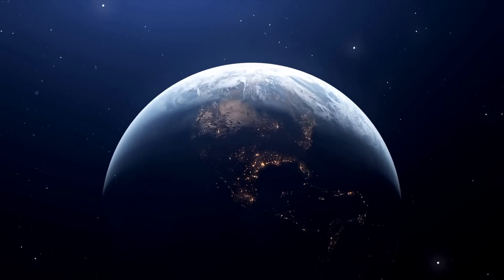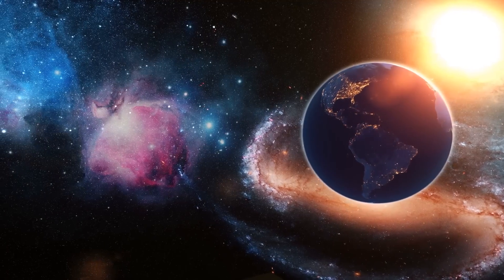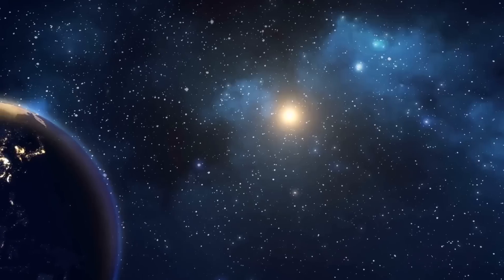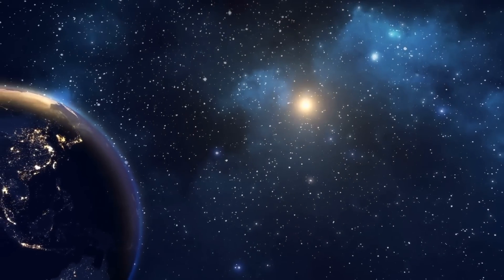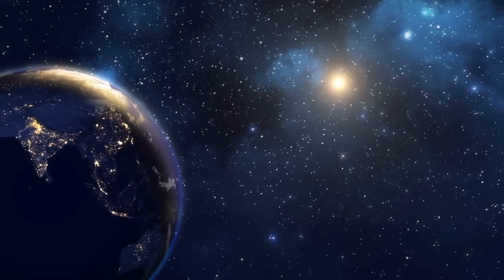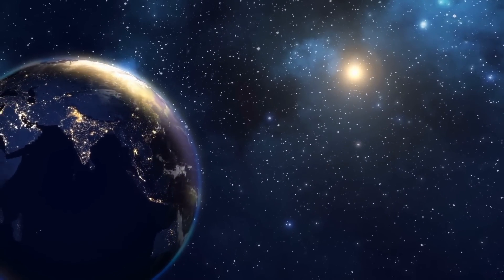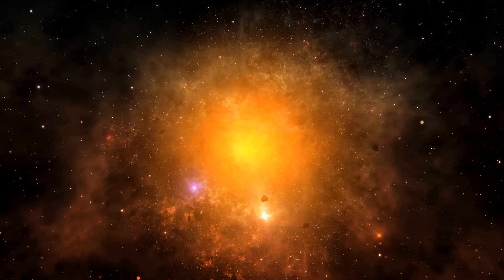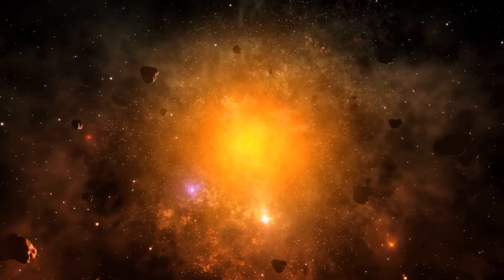Speaking of potential impacts on Earth, it is essential to emphasize that Betelgeuse is located at a distance of about 700 light years. At this considerable distance, a supernova would not pose a direct threat to our planet in terms of physical impact. Despite its immensity, the energy and radiation released by the explosion would be sufficiently dispersed in the vastness of space to reach Earth harmlessly.